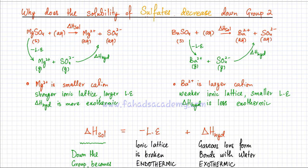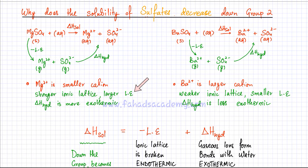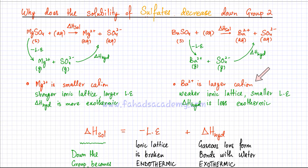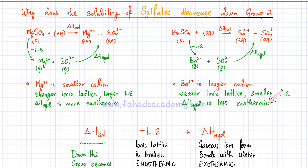So it's exactly the same. Mg²⁺ is a smaller cation and so it's going to form stronger bonds — it would have a stronger ionic lattice. So the lattice enthalpy, or minus lattice enthalpy since we are breaking the lattice, is going to be very large because it requires a lot of energy to break a very strong ionic lattice. And because it's a smaller cation, it forms stronger bonds with water molecules, which is why enthalpy of hydration is going to be more exothermic. Barium²⁺, on the other hand, is a larger cation, so its ionic lattice would be weaker and the lattice enthalpy value would be smaller — it would be a lot easier to break the BaSO₄ ionic lattice. The enthalpy of hydration is also going to be less exothermic because the larger cation does not make very strong bonds with water molecules.